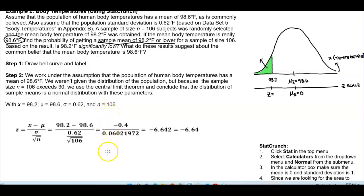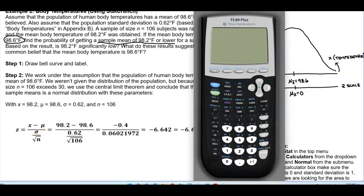So we're going to go ahead and use our formula where Z is equal to X, the data value, minus the mean over the standard deviation divided by the square root of n. Let's go ahead and put this information into our calculator. So we take 98.2 and then we're going to subtract 98.6.